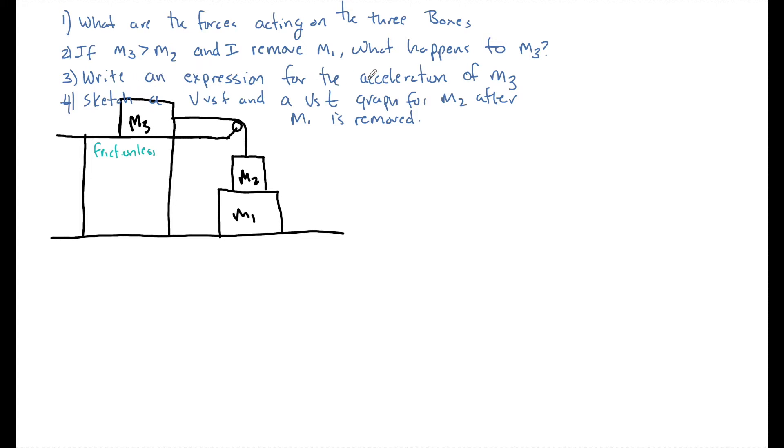We're then going to write an expression for the acceleration of M3, even if it's zero, and then sketch a V versus T and an A versus T graph for M2 once I remove M1.